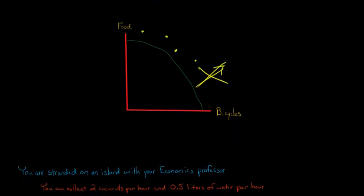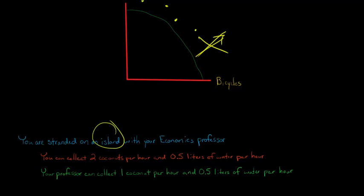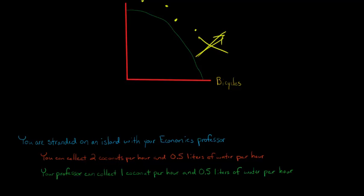So I want to give you an example. Let's say that you are stranded on a deserted island after a plane crash with only your economics professor. You can collect two coconuts per hour — you have to climb trees or whatever — or you can collect half a liter of water. Let's say there's a spring, so for one hour's work, you could either collect two coconuts or half a liter of water.